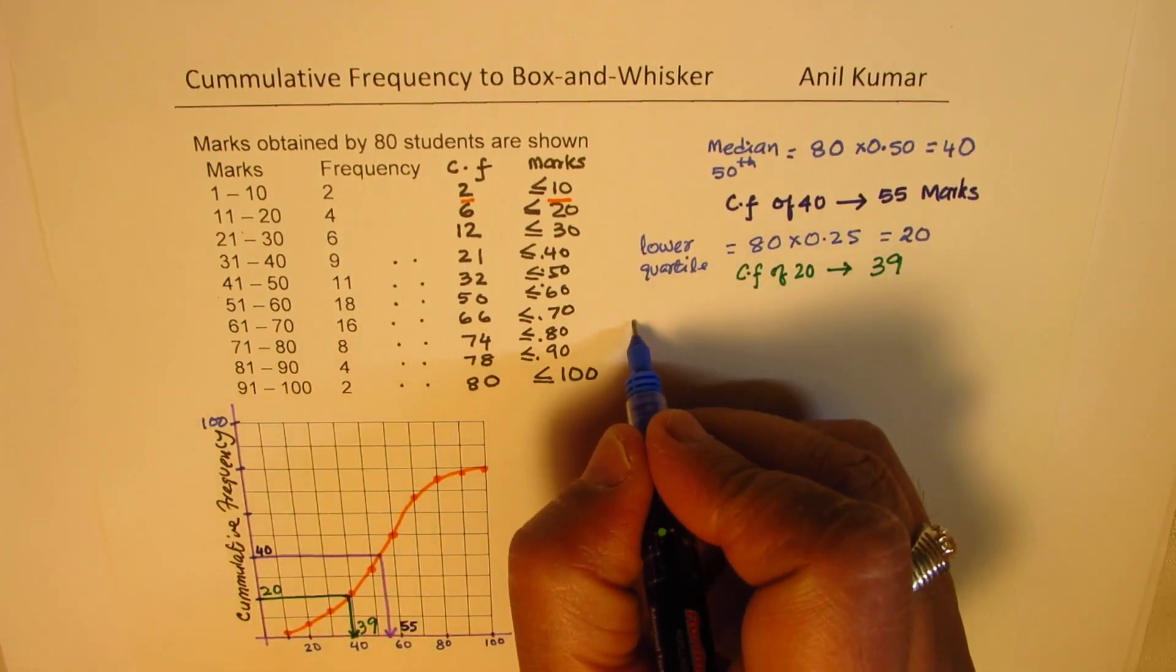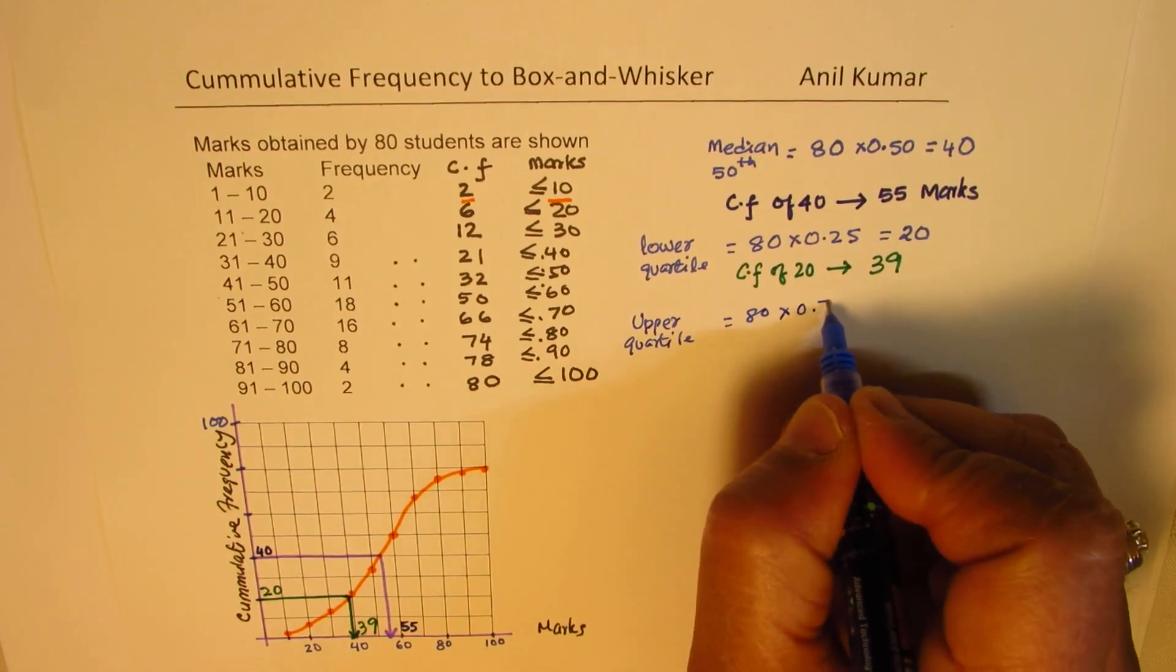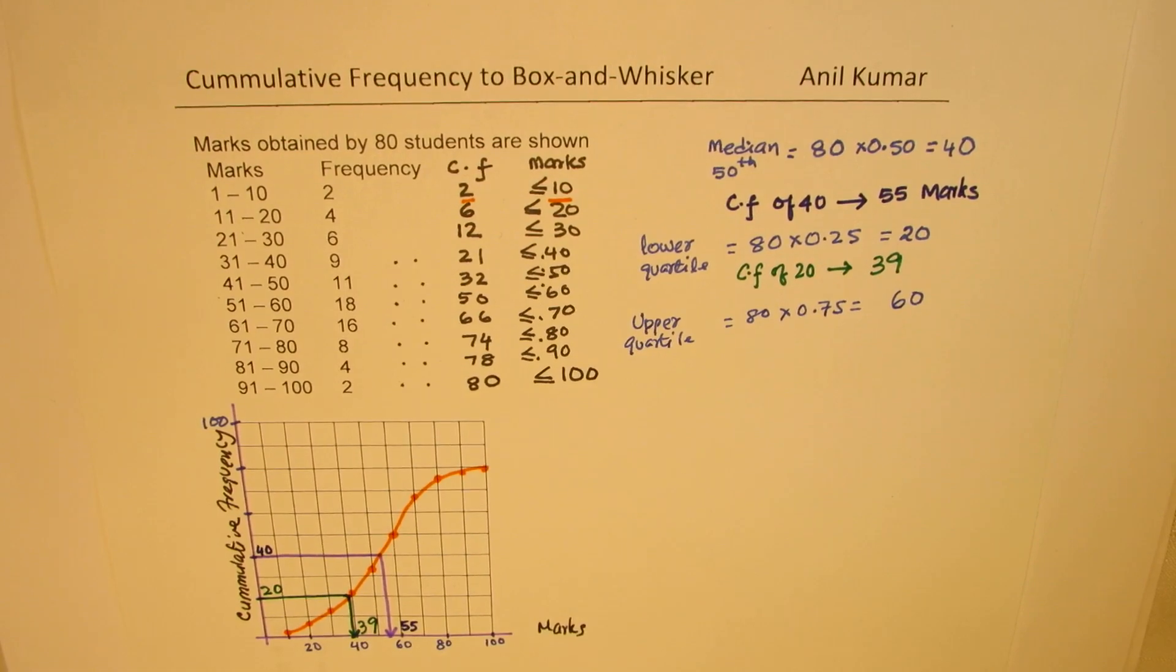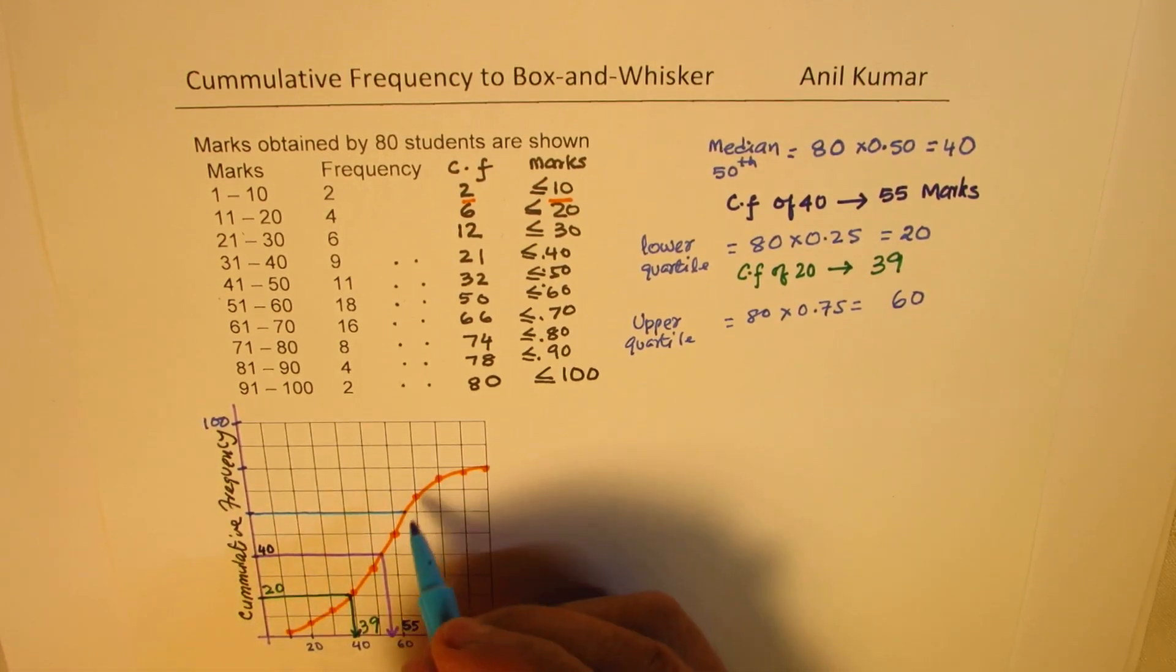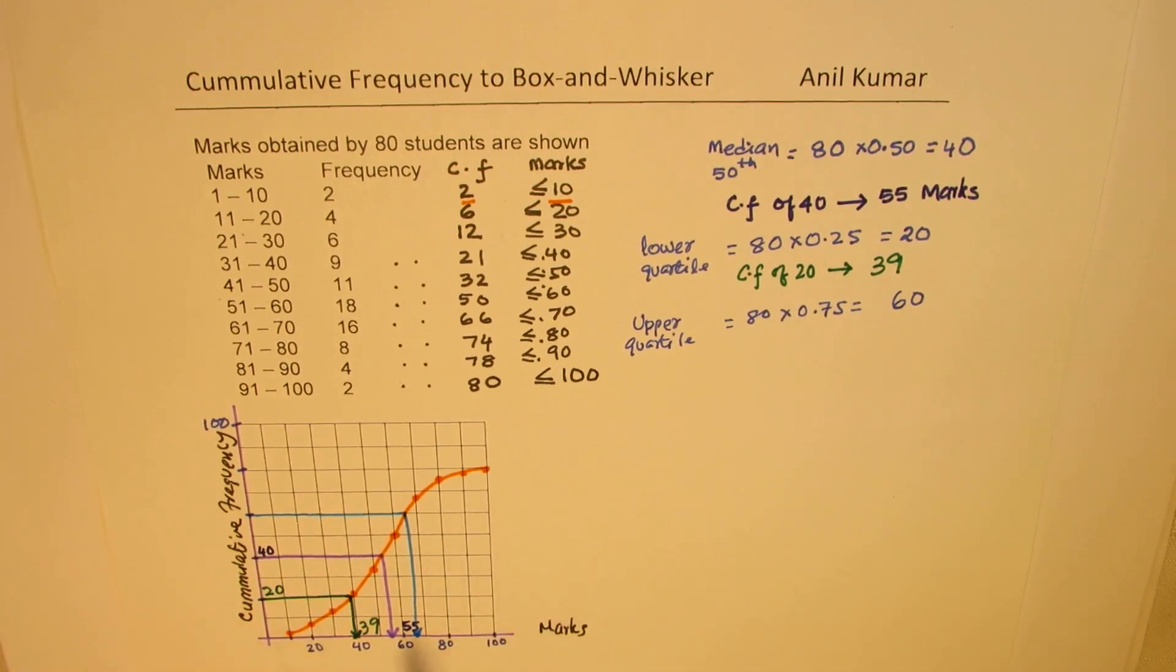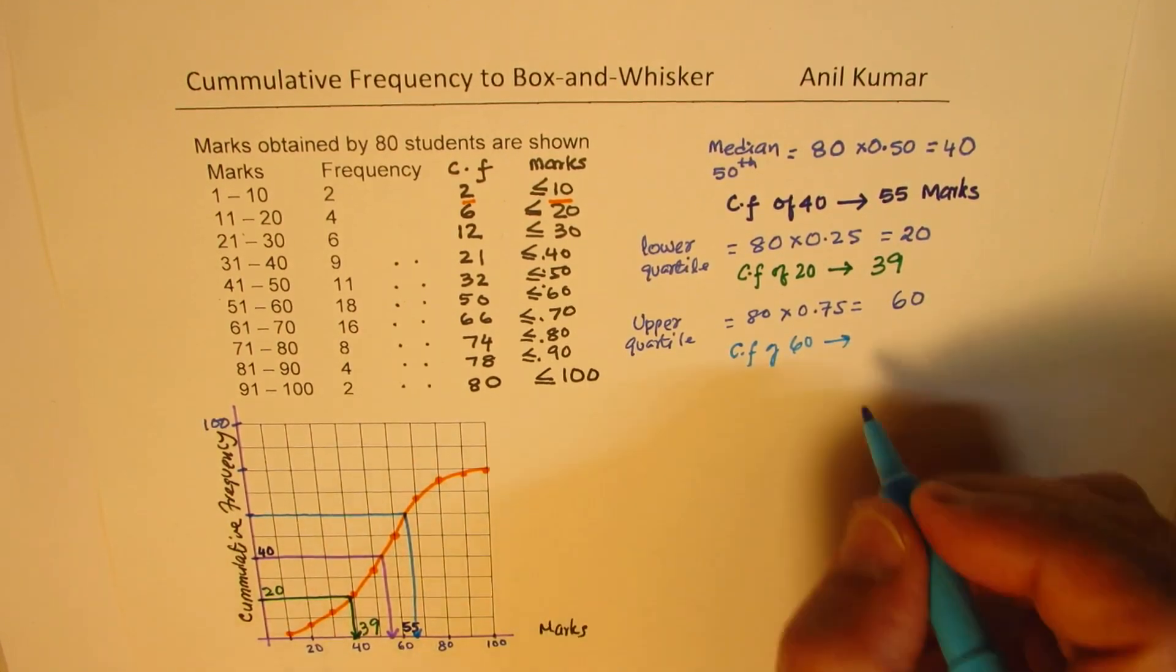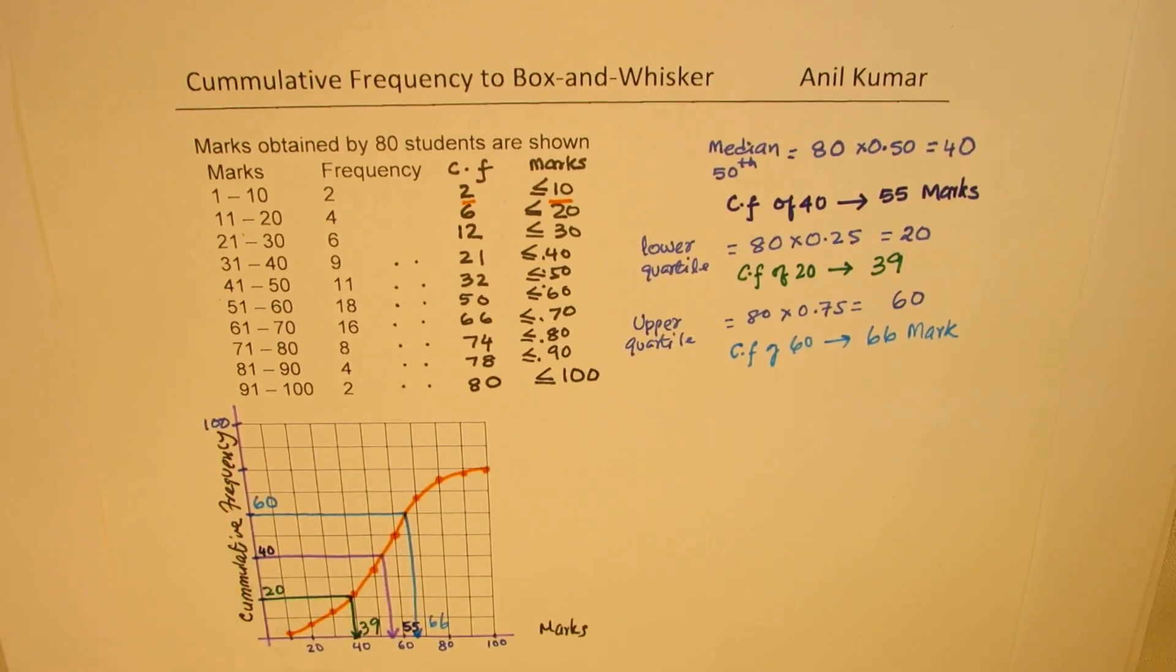Now, the upper quartile is the 75% mark. 3/4th. 3/4th will be 60 in this case. We've taken easy values to understand the graph, making our calculations simple. That's the whole idea. Now, for 60, this is 60 mark. On the cumulative frequency graph, we get a value, which is around this. We can read this as in between 60 and 70. So, let's take this as, at cumulative frequency of 60, what we read as is less than 70. Between, we'll say, 66 is the mark. So, we're reading this as 66 for 60. Do you get an idea? So, that is how we get our quartiles.